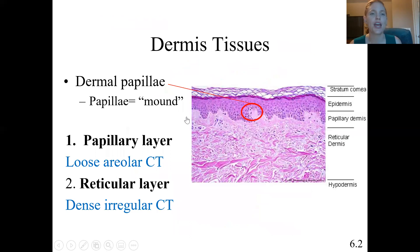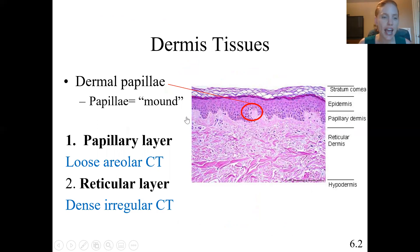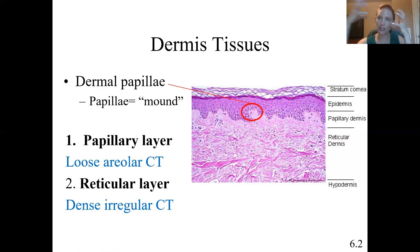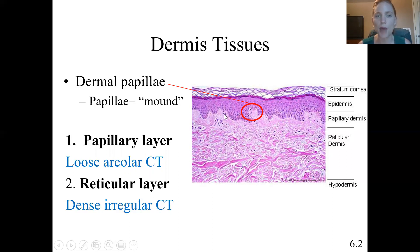The dermis has two layers: the papillary layer and the reticular layer. The papillary layer is the more superficial one, located directly underneath the epidermis. It contains loose areolar connective tissue, which is a connective tissue proper that essentially glues the epidermis on top. You need to know that specific tissue type for the papillary layer.